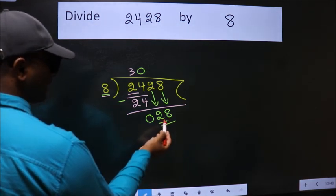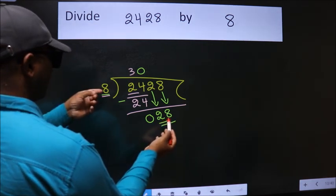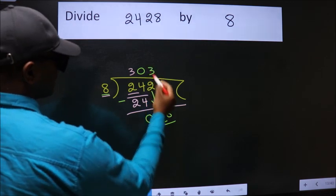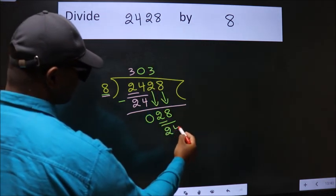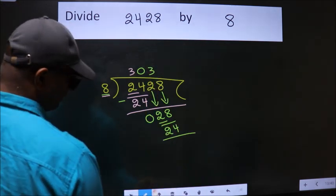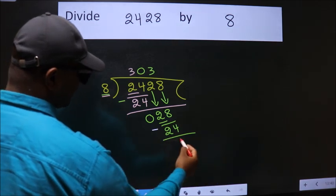A number close to 28 in the 8 table is 8 times 3 is 24. Now we subtract. We get 4.